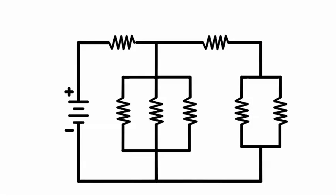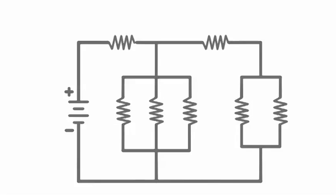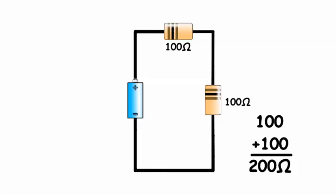We can simplify the circuit using three formulas. Series resistors, that is resistors that share a single path to ground, are simply added together.